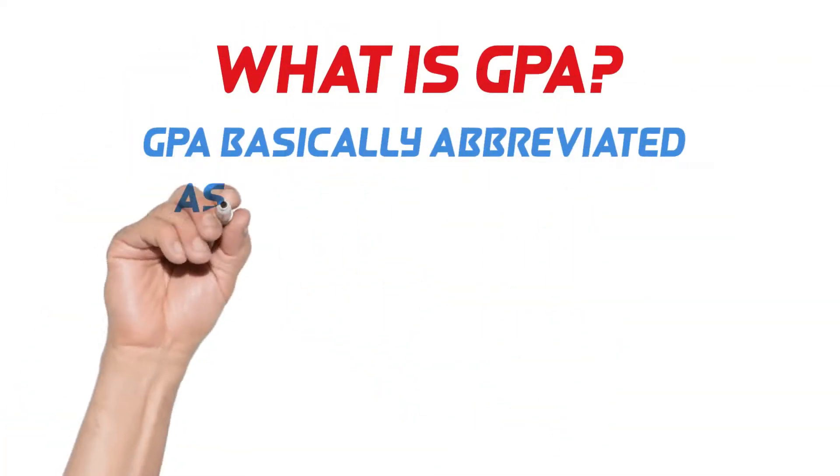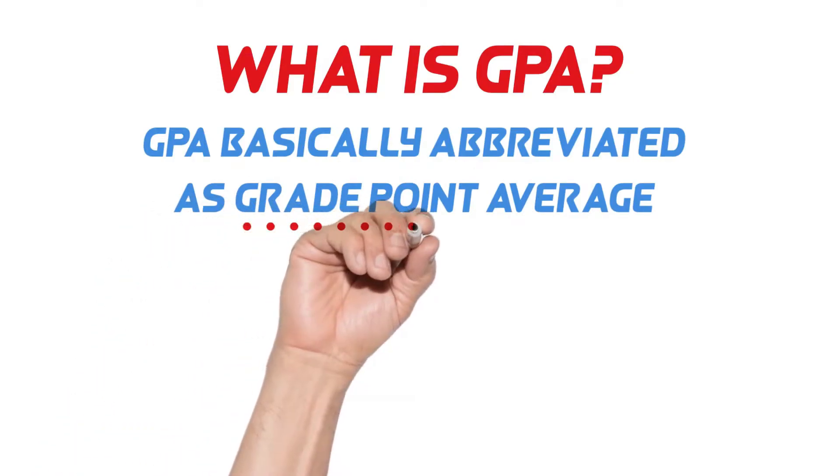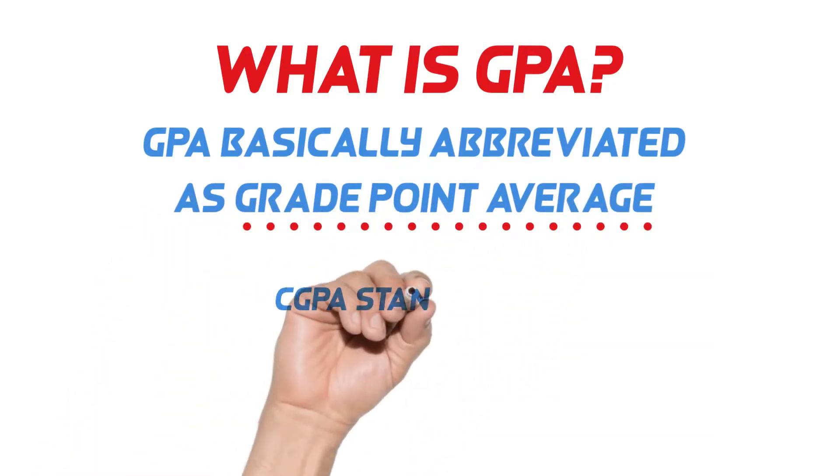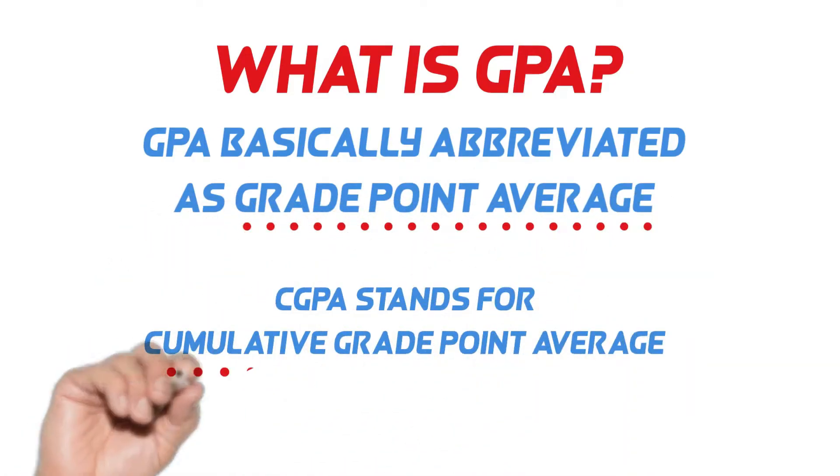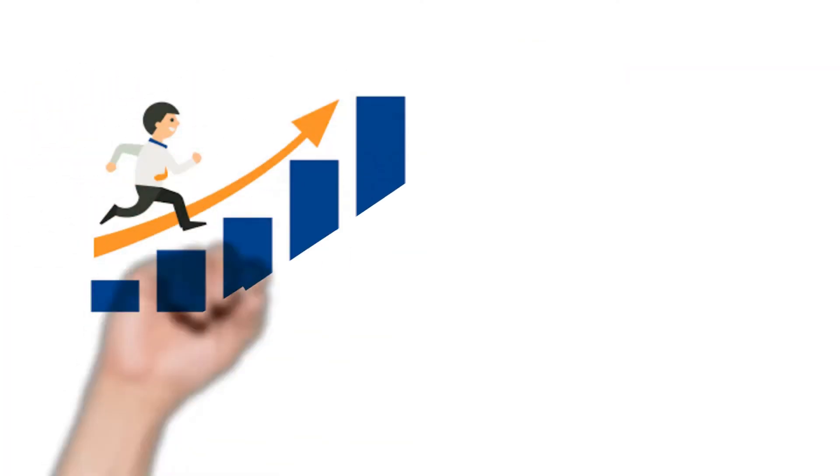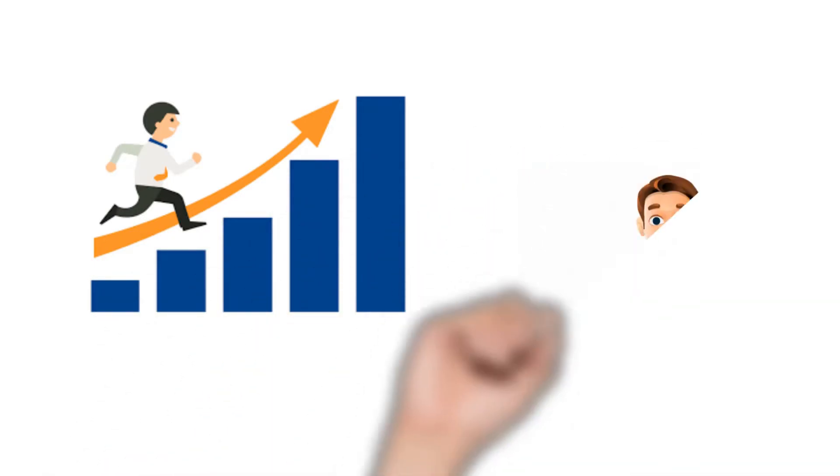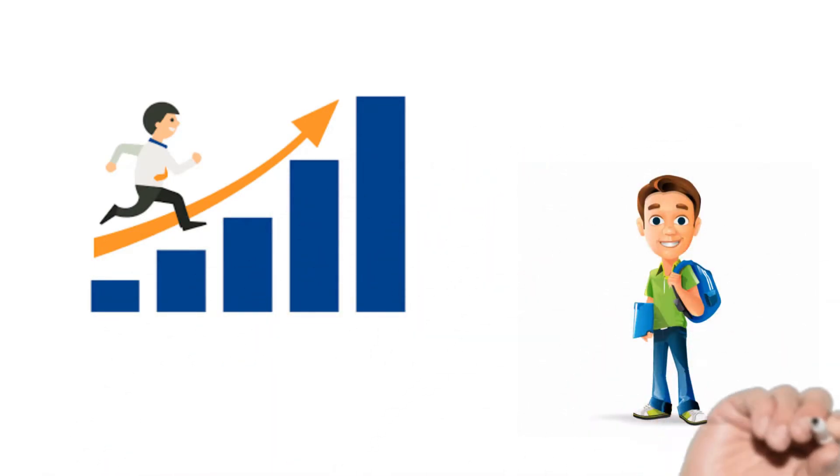GPA is abbreviated as grade point average and CGPA stands for cumulative grade point average. GPA is a number that indicates how well or how high you scored in your courses on average. It's meant to score you during your studies and shows whether your overall grades have been high or low.